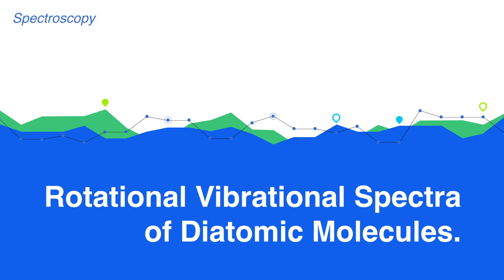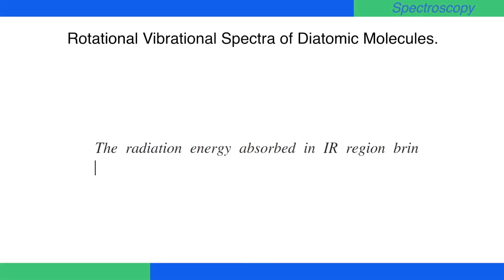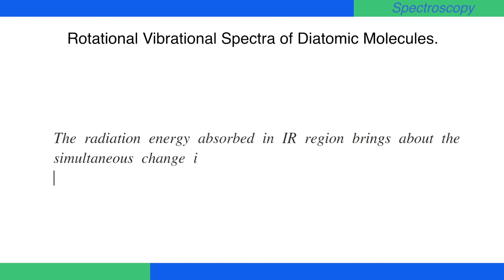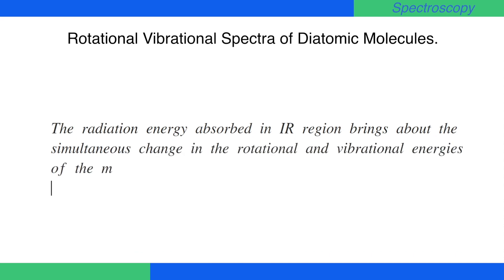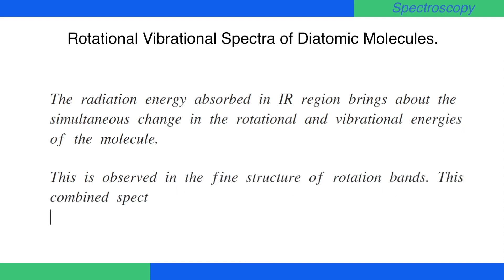Discuss rotational vibrational spectra of diatomic molecules. The radiation energy absorbed in the IR region brings about the simultaneous change in the rotational and vibrational energies of the molecule. This is observed in the fine structure of rotation bands. This combined spectrum is called the vibrational rotational spectrum.